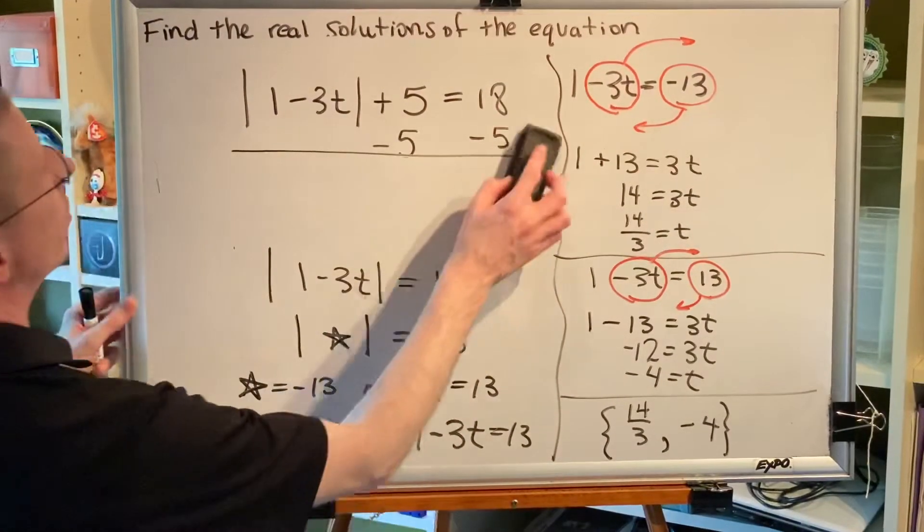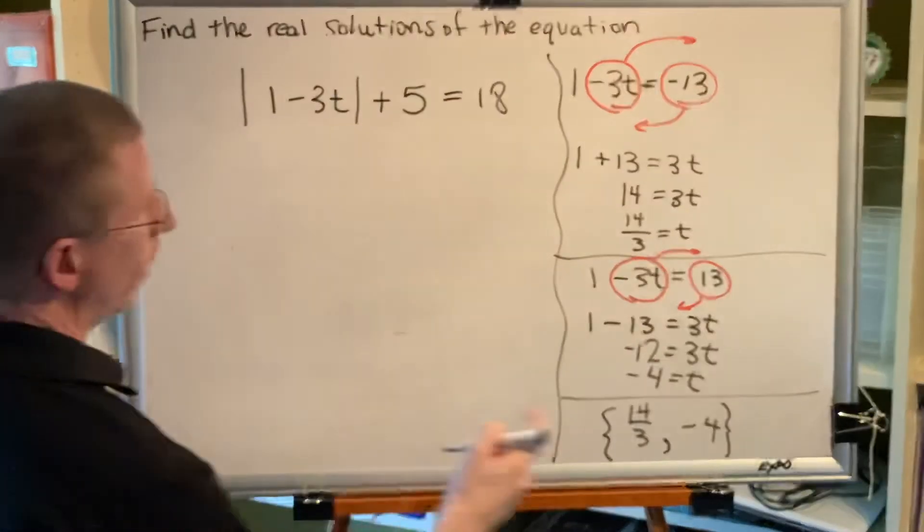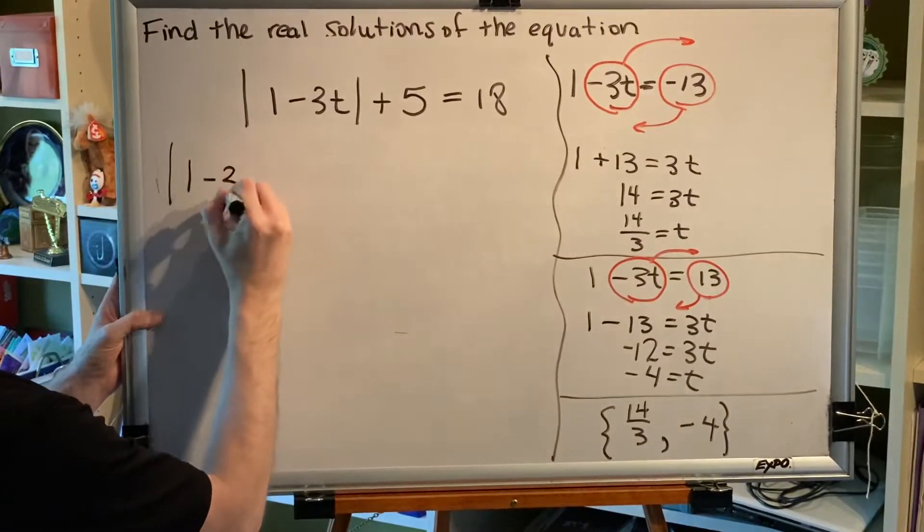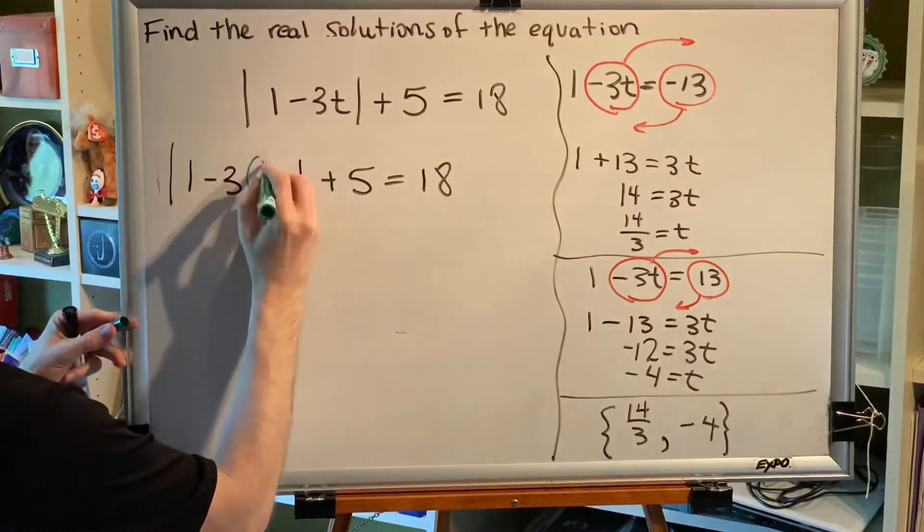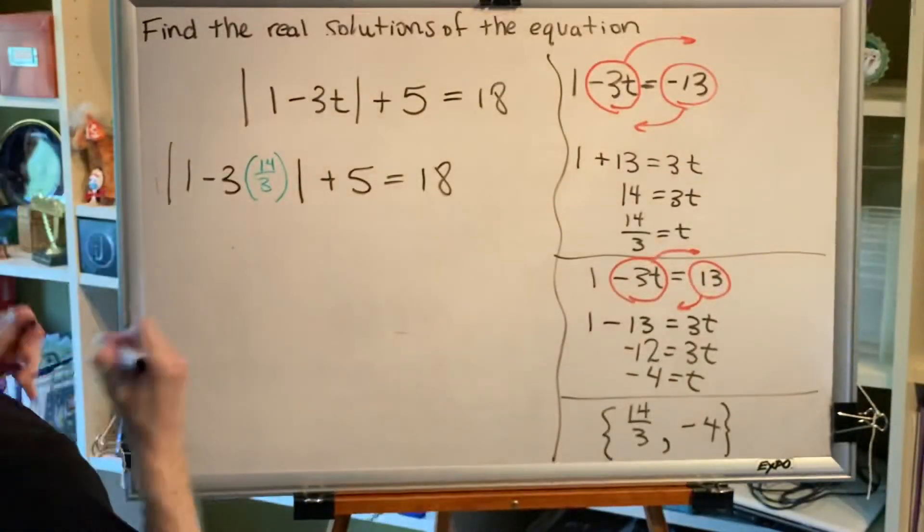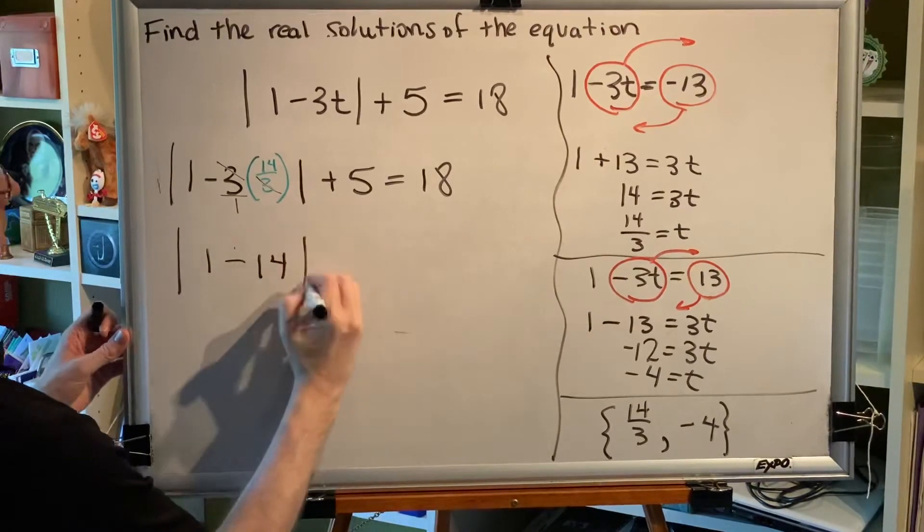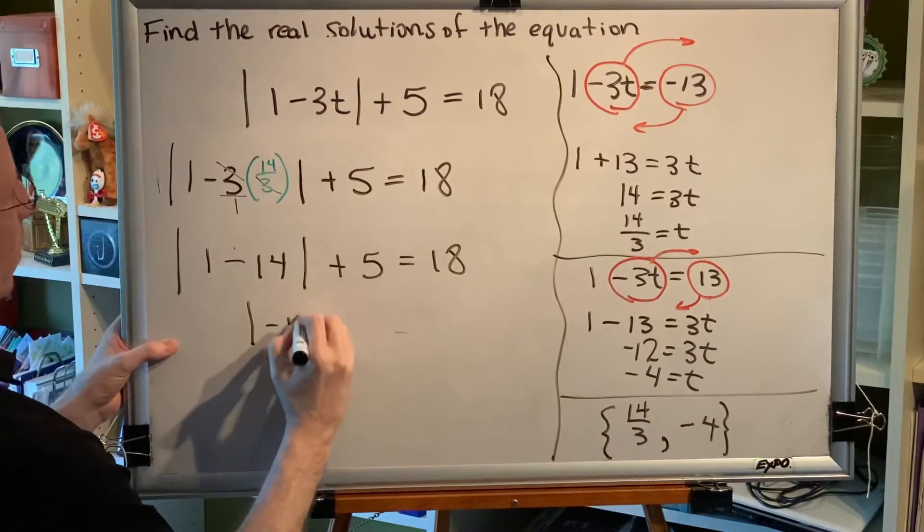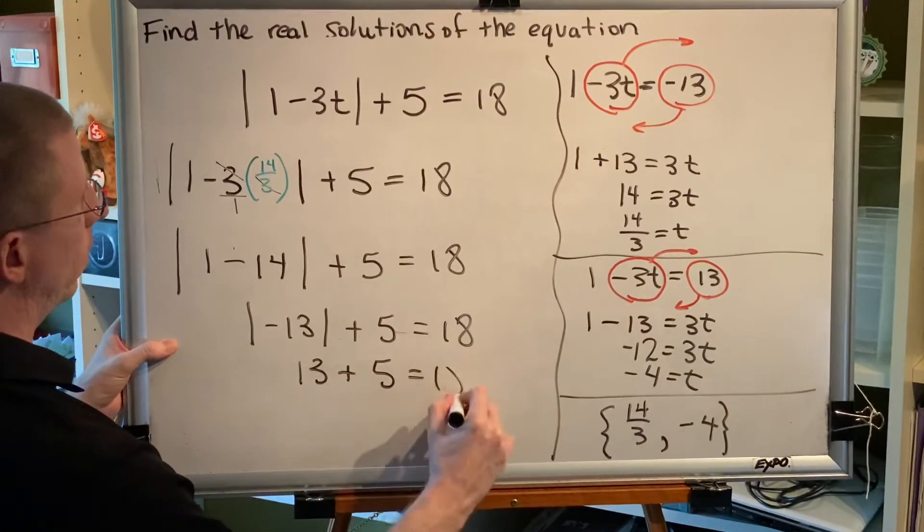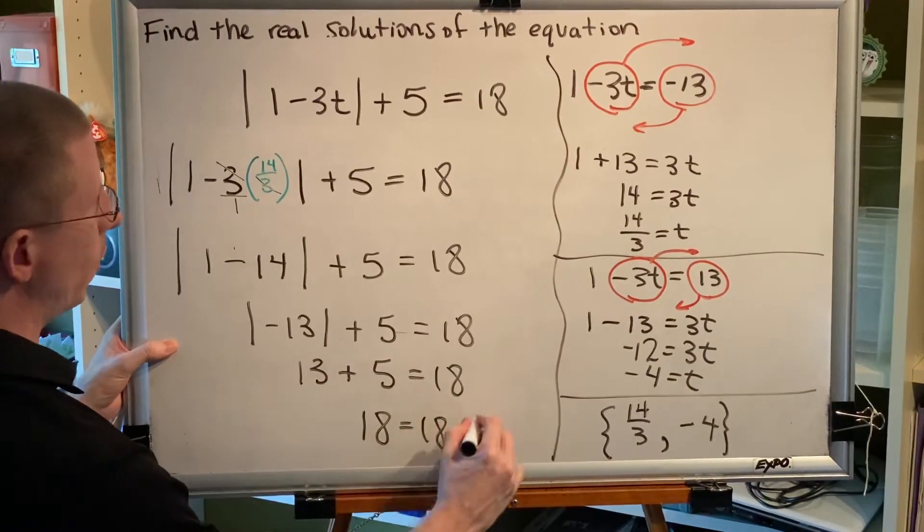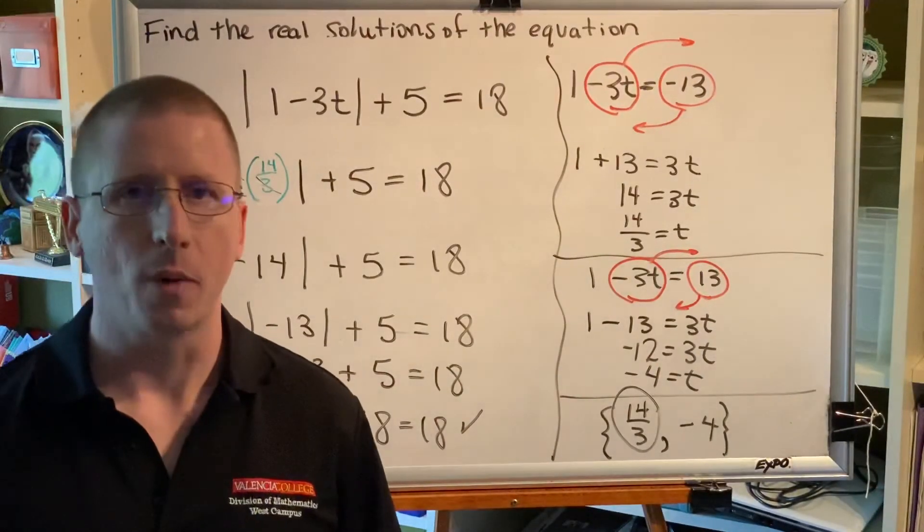Is it possible to check our solution? The answer is yes. Let's check one of these values. I'll let you check the other. Let's check 14 thirds. So, anywhere I see my variable t, I'm going to put the value that I'm testing, 14 thirds. Alright. Well, 3 is the same as 3 over 1. And these 3s are going to cancel. So, I'll have 1 minus 14 plus 5 equals 18. The absolute value of negative 13 plus 5 equals 18. The absolute value of negative 13 is positive 13. And 13 plus 5 is 18. So, I get 18 equals 18. And this value is proven as being correct. If we plugged in the other value, we would find that it is correct as well.